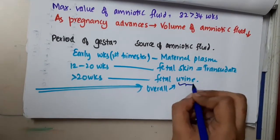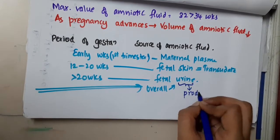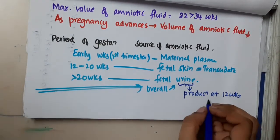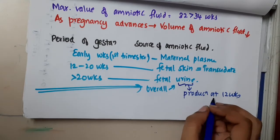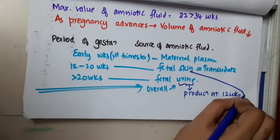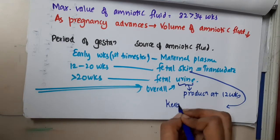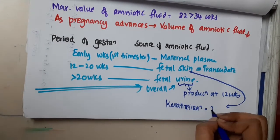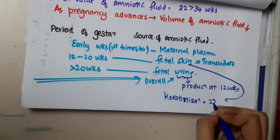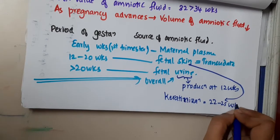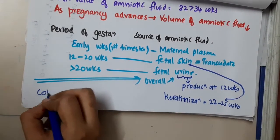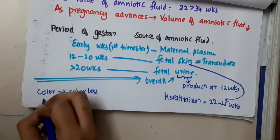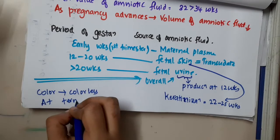Fetal urine production occurs at 12 weeks of pregnancy. Keratinization of the skin occurs at 22 to 25 weeks. The color of amniotic fluid is actually colorless, but at term it becomes straw colored.